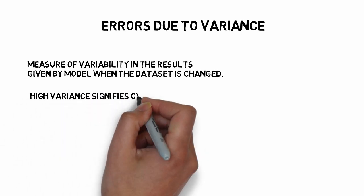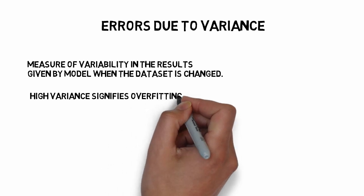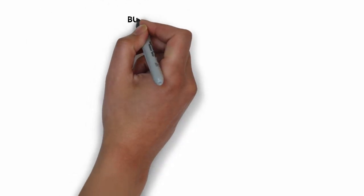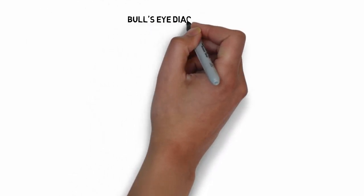it means that our predictions are going to be very different when we give the same test case. So having high variance signifies our model is overfitting.